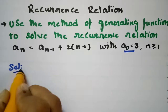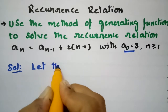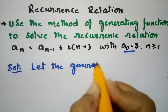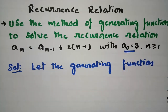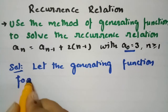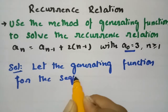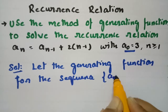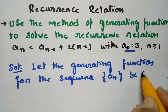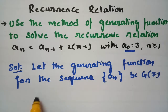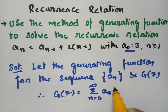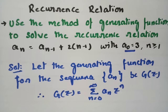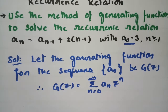In the solution, let the generating function for the sequence be G(z). Therefore G(z) = Σ (n=0 to ∞) aₙ zⁿ. Now the given recurrence relation from the question is aₙ = aₙ₋₁ + 2(n−1).